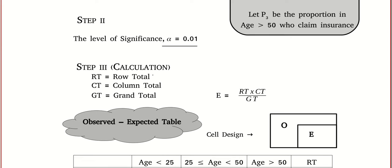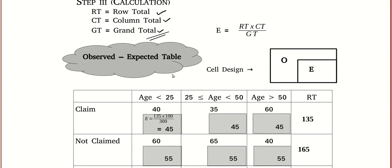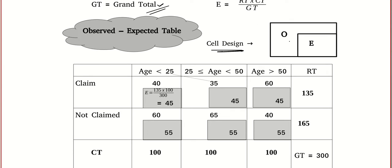I hope you remember the usual terms: row total, column total, grand total. I'm sure you saw the same kind of table in independence of attributes. As given, the cell design—observed and expected. I'm writing all the observed values: 40, 35, 60. I've added one column here to write the row total and I've added one row here to write the column total. The last one over here is the grand total.